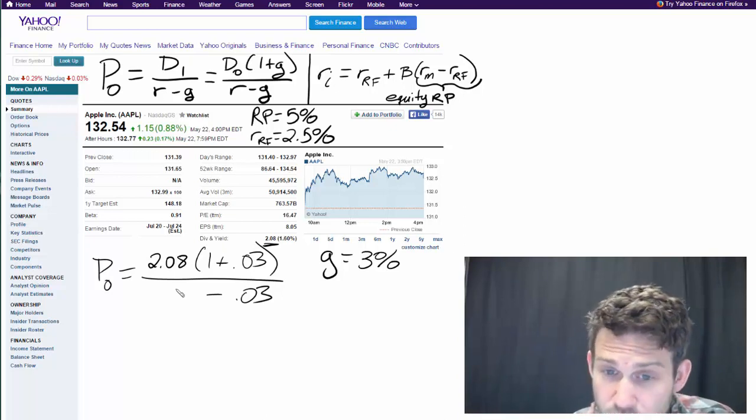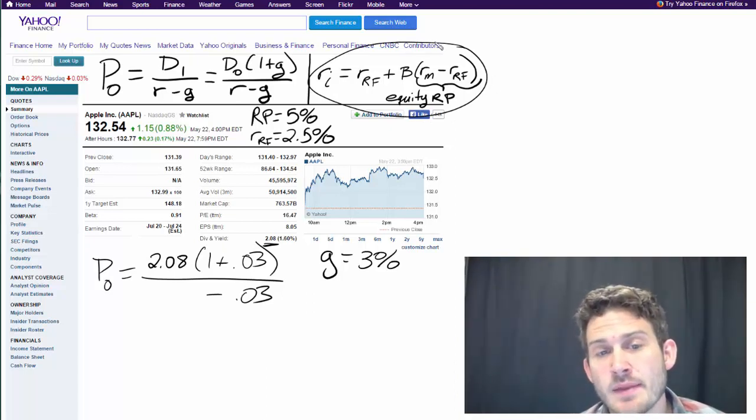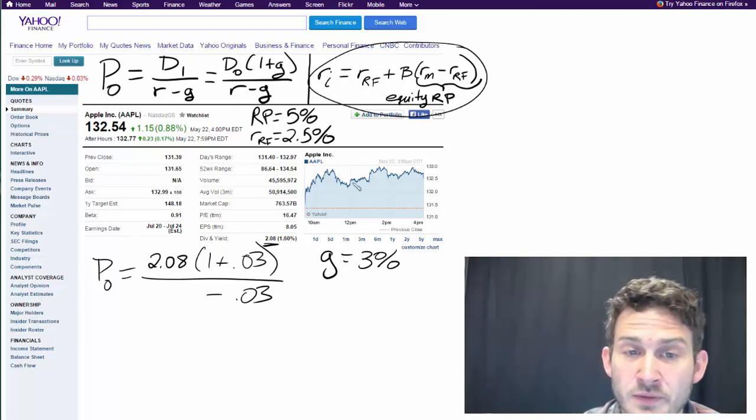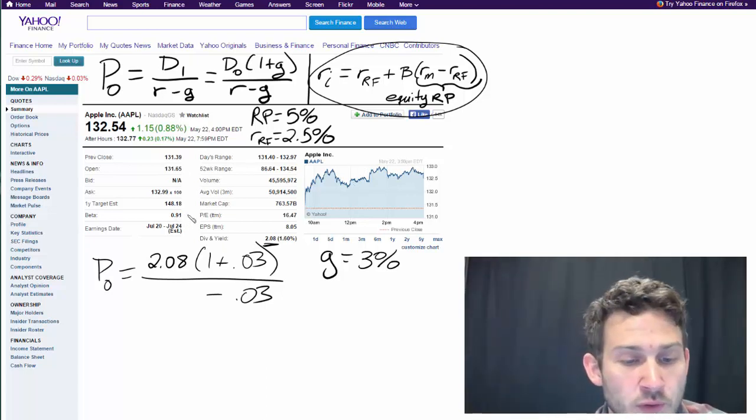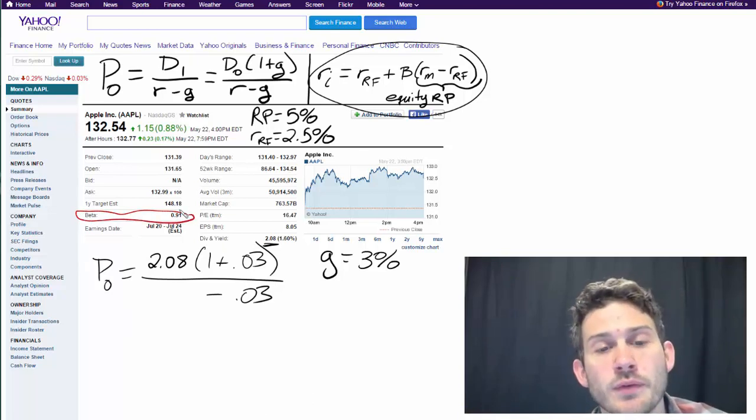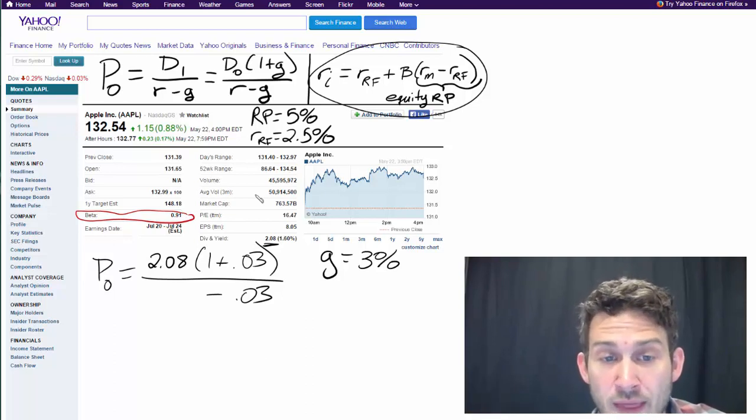That model right there is CAPM. That's going to tell us what our required return on the stock is. One of the models that we historically use is the one right here that uses beta. That's going to be the closest information that anything in this table here gives you about the value of that stock. Now we plug all that stuff in here. We have our risk premium and our risk free rate.